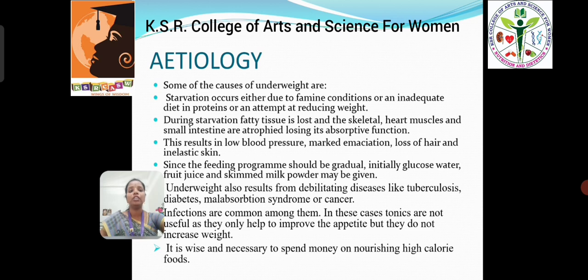Etiology. Starvation occurs either due to famine conditions or an inadequate diet in protein, or an attempt at reducing weight. During this time, fatty tissue is lost and the skeletal muscles, heart muscles, and small intestine lose their absorptive function. This results in lower blood pressure, loss of heart function, and inelastic skin. Since the feeding program should be gradual, initially glucose water, fruit juice, and skim milk powder may be given.